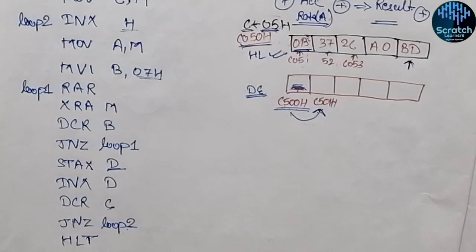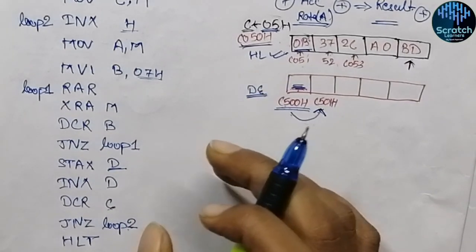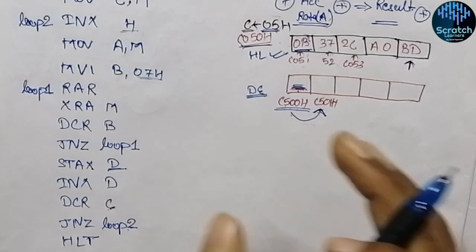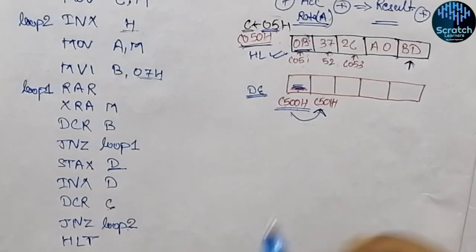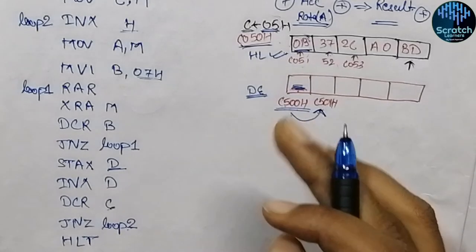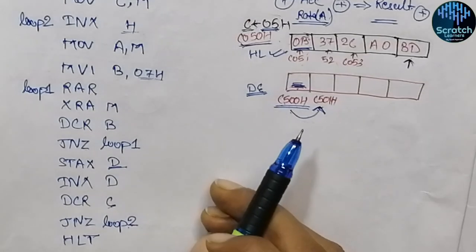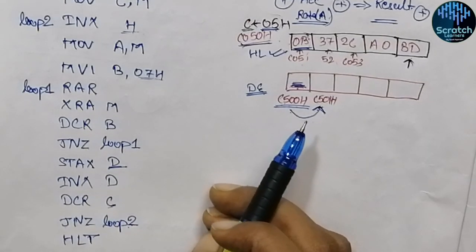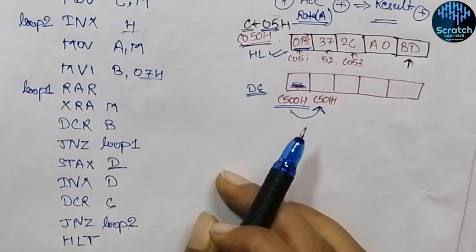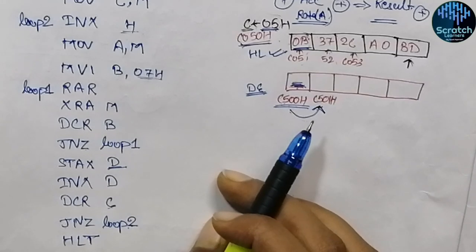This is how we convert gray code into binary numbers for an array of elements in 8085. I hope you understood this video. If you liked it, please subscribe to our channel to support us. See you in the next video — thank you!